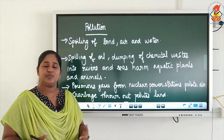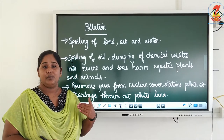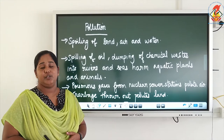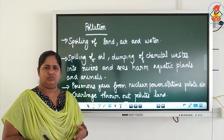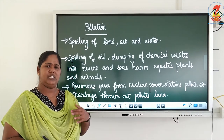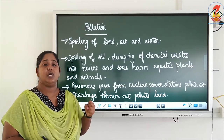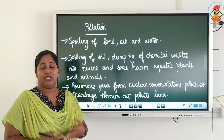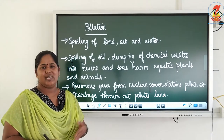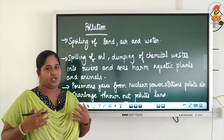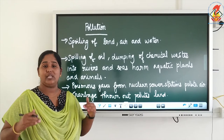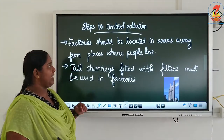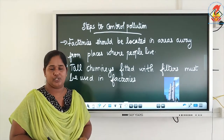The harmful substances which cause pollution are called pollutants. Nuclear power stations — in fact all types of power stations — produce smoke. Especially nuclear power stations pollute the air to a great extent. Preventing pollution is not at all possible, but controlling pollution can be done.